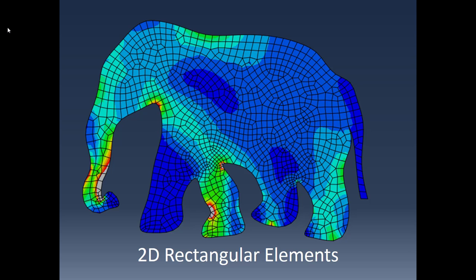This video goes through the development of a 2D rectangular element, one that has four nodes, so it's going to have a bilinear displacement field inside of it, as we'll see.